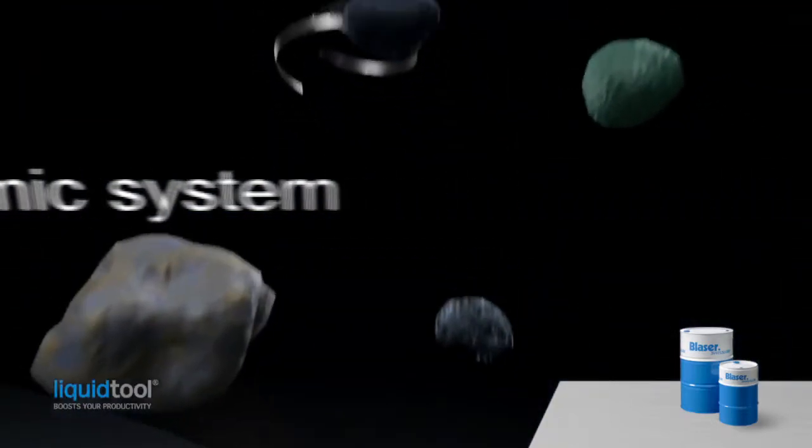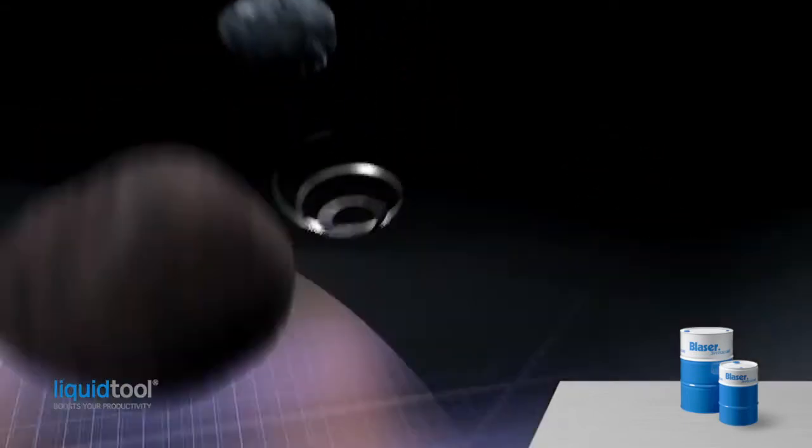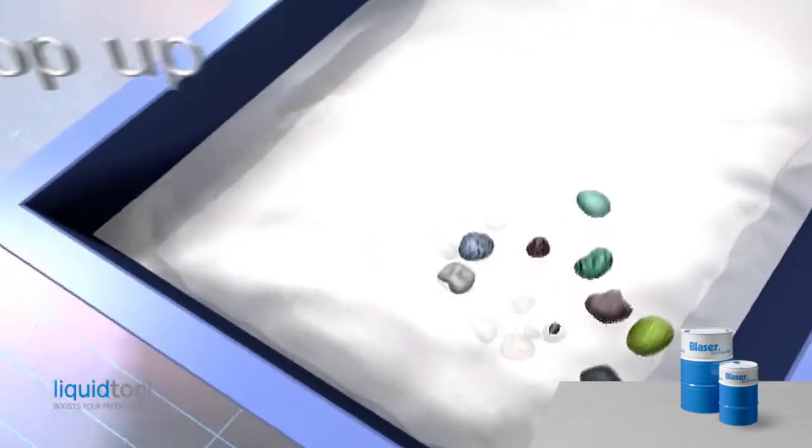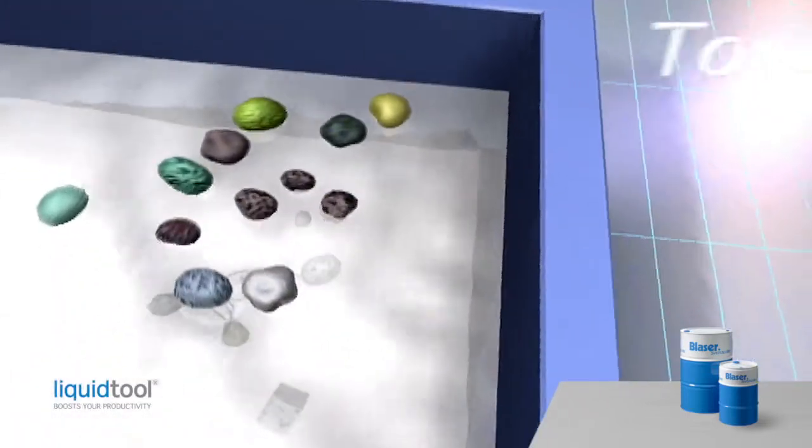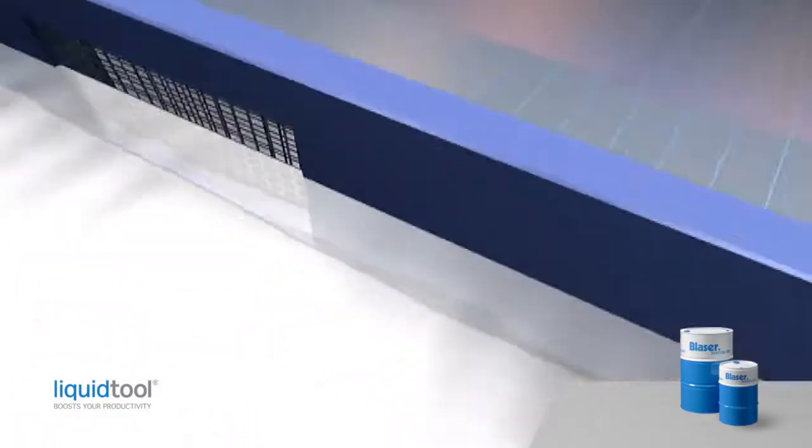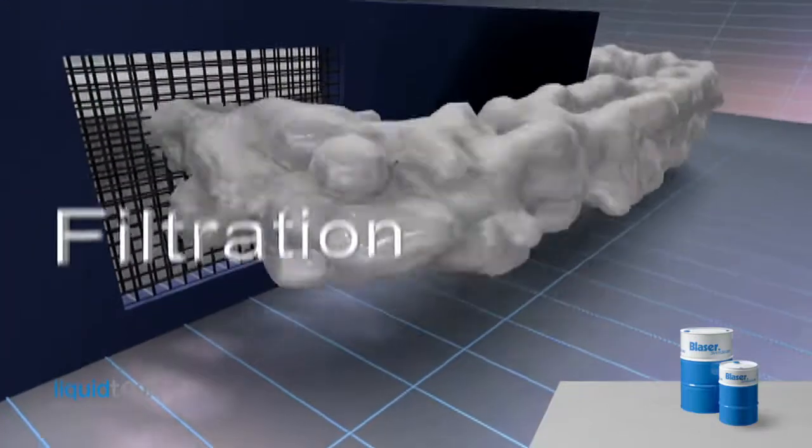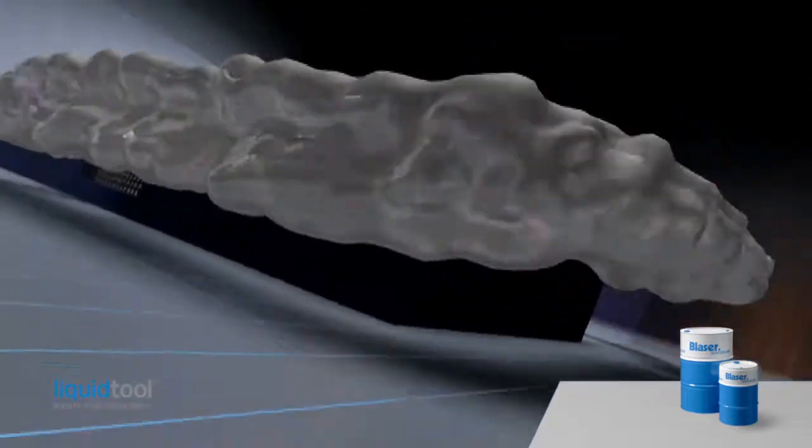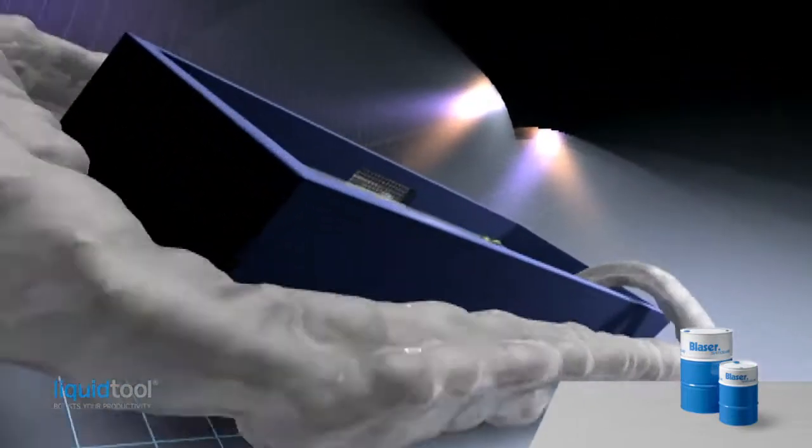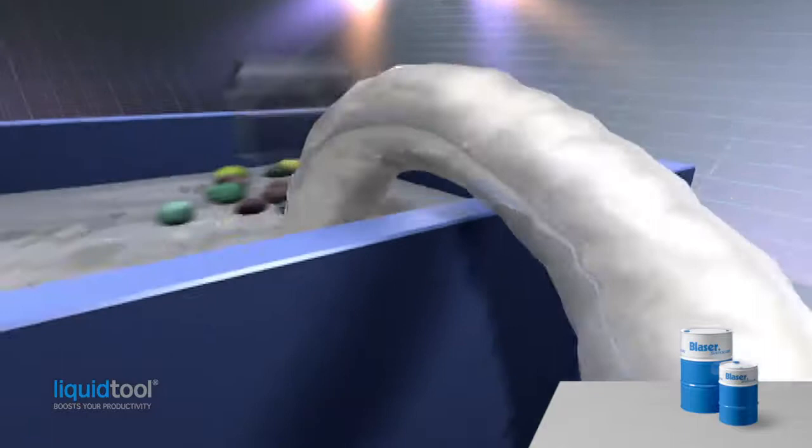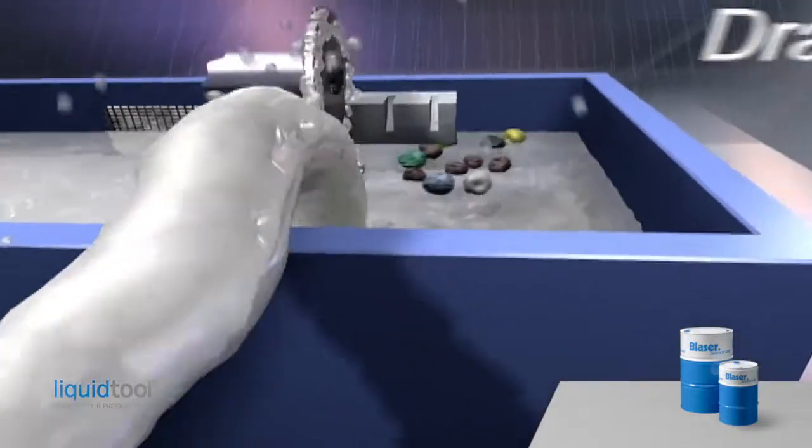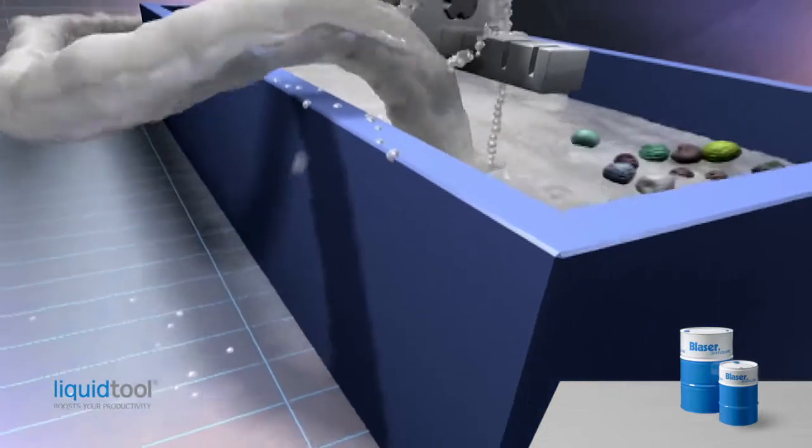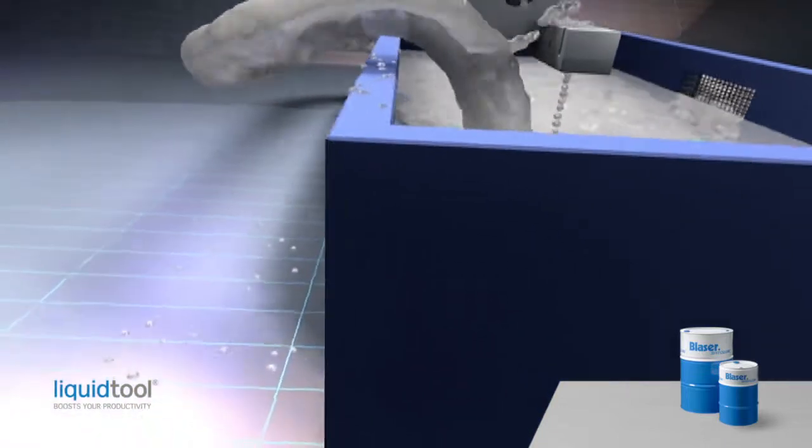However, cutting fluids are used in a dynamic environment. Water in the top-up emulsion regularly adds hardness and salts. Some of the emulsion is dragged out of the system with chips and workpieces. During machining, the emulsion is contaminated with ultrafine sludge and tramp oil. The high turbulence and temperature at the cutting edge causes water evaporation and mist formation.